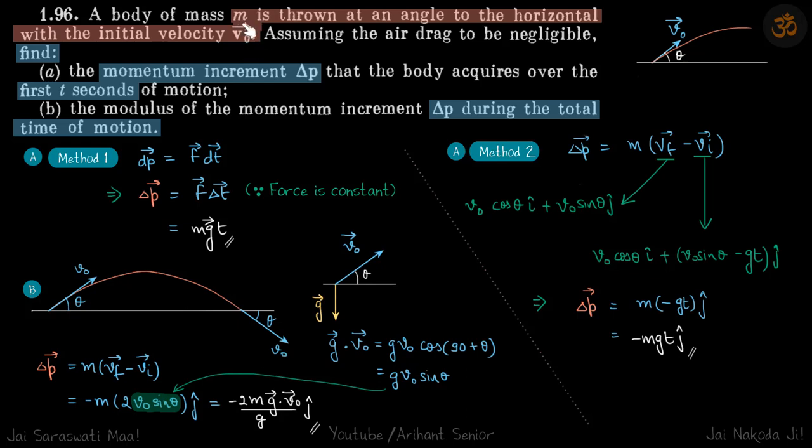A body of mass m is thrown at an angle to the horizontal with initial velocity v0 vector. Assume the air drag is negligible. Find the momentum increment delta p in the first t seconds and the delta p during the total time of motion. So the object is launched at an angle theta. Theta is not given, they are given as v0 vector, so we need to find the momentum increase.